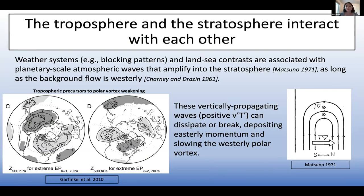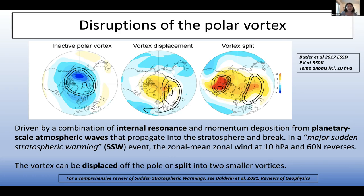The vertically propagating waves — a positive eddy heat flux or b-prime T-prime — can dissipate or break in the stratosphere. When this happens, it deposits easterly momentum and slows the westerly polar vortex down, sometimes very rapidly. The momentum deposition from planetary-scale waves is thought to be a key mechanism for driving these disruptions, but it's not the only one — the stratosphere itself needs to be in the right state for the breakdown, as there's some internal resonance of the wave once it's in the stratosphere. These two processes together explain a lot of why vortex breakdowns occur.